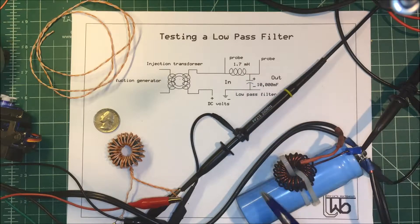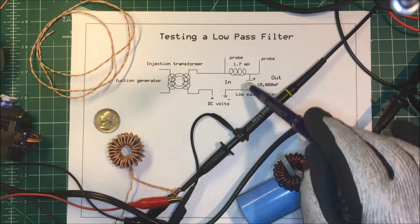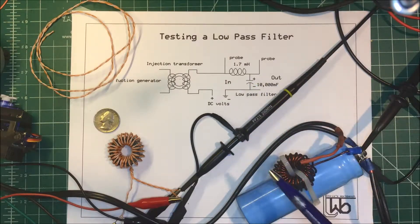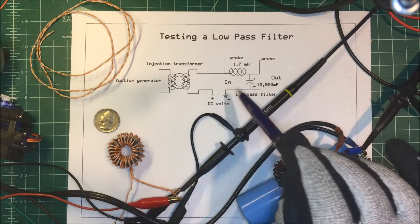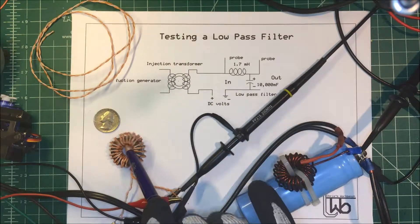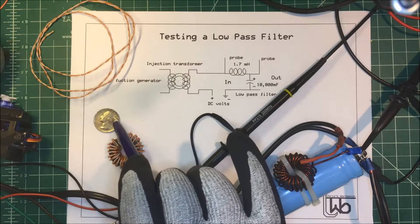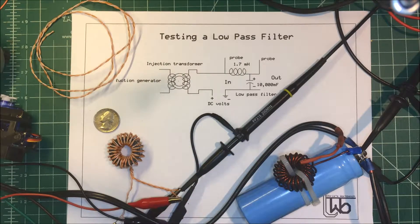It could even overheat the capacitor and wreck it. So we don't put any AC on our electrolytic capacitor. What I'm going to do is I put together an injection transformer, here it is here. I took a ferrite core, and there's a quarter here to give you the size, and I wound it with some wire.